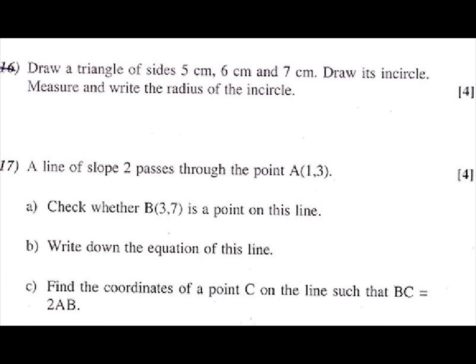17th question: A line of slope 2 passes through the point A(1,3). Part A: Check whether B(3,7) is a point on this line. Part B: Write down the equation of this line. Part C: Find the coordinates of a point C on the line such that BC equals 2AB.